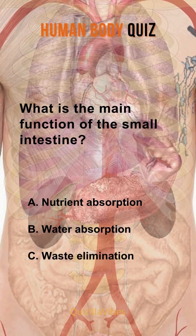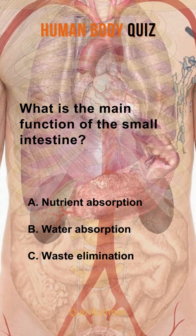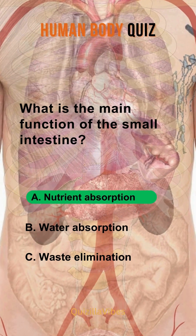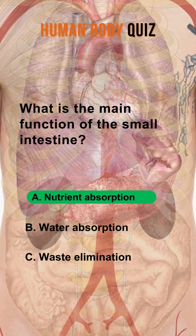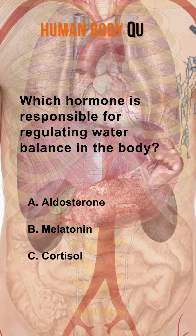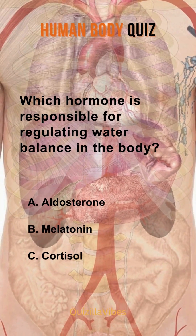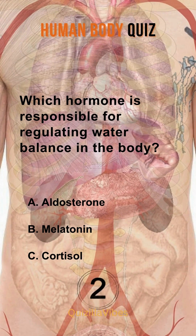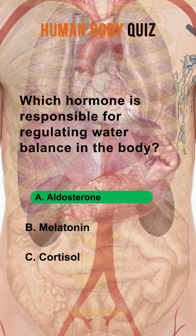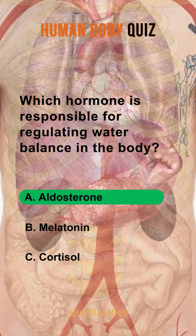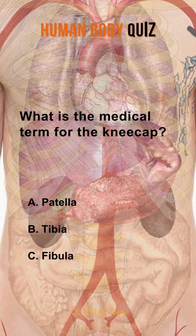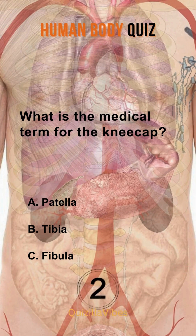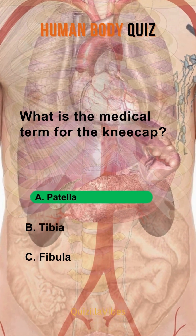What is the main function of the small intestine? Nutrient absorption. Which hormone is responsible for regulating water balance in the body? Aldosterone. What is the medical term for the kneecap? Patella.